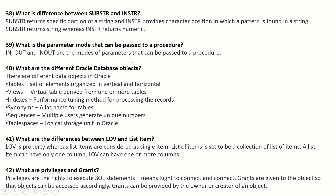What are the parameter modes that can be passed to a procedure? IN, OUT, and IN OUT are the modes of parameters that can be passed to a procedure. What are the different Oracle database objects? Tables — set of elements organized in vertical and horizontal format; views — virtual tables derived from one or more tables; indexes — performance tuning method for processing records; synonyms — alias names for tables; sequences — generate unique numbers for multiple users; table spaces — logical storage units in Oracle.